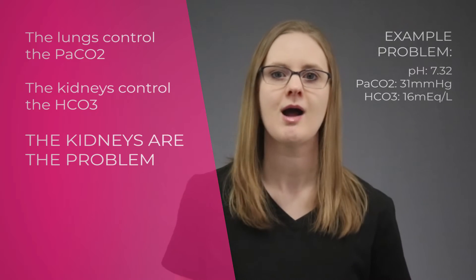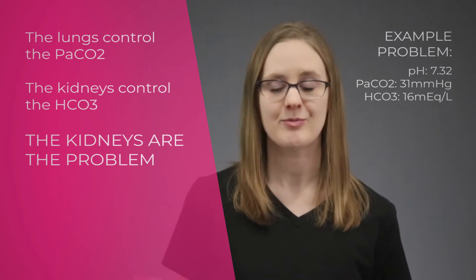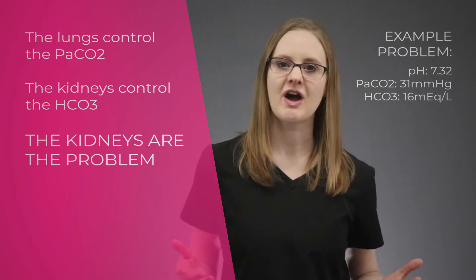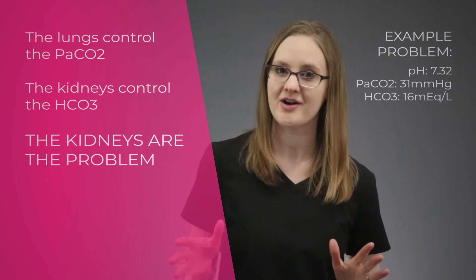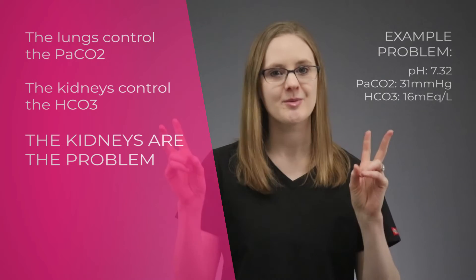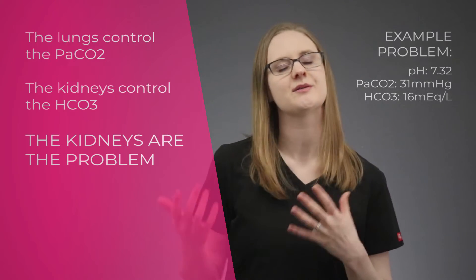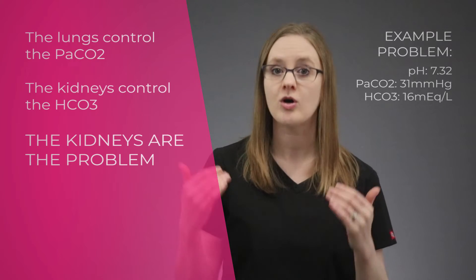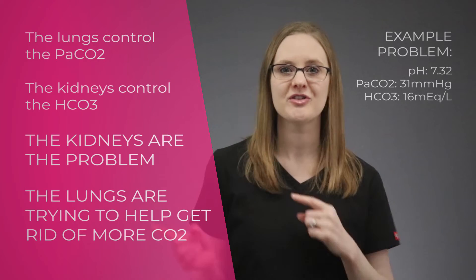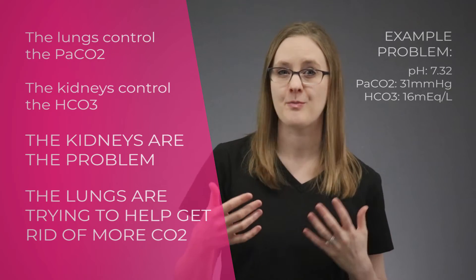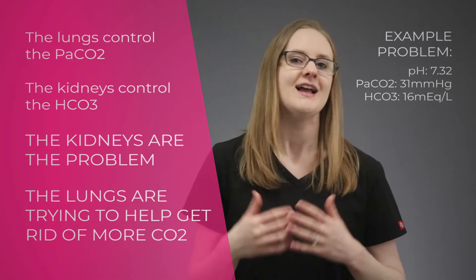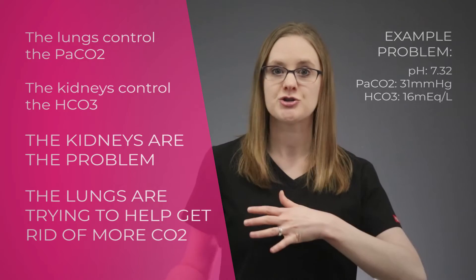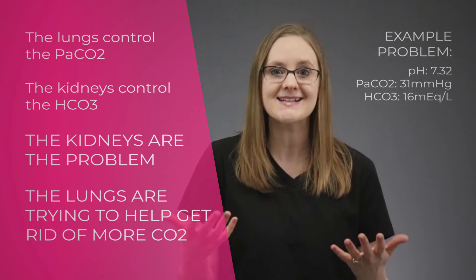So in this example, the kidneys are the party poopers, and that makes this example metabolic acidosis. Now that we've got that figured out, we need to decide if the other guy — I like to call him the life of the party — if he's helping or not. In this case, the life of the party is the lungs, and we see that the PaCO2 value is lower than the normal range, which means the lungs know there's a problem and have decided to get rid of more CO2 to help bring that acid level down in the body.